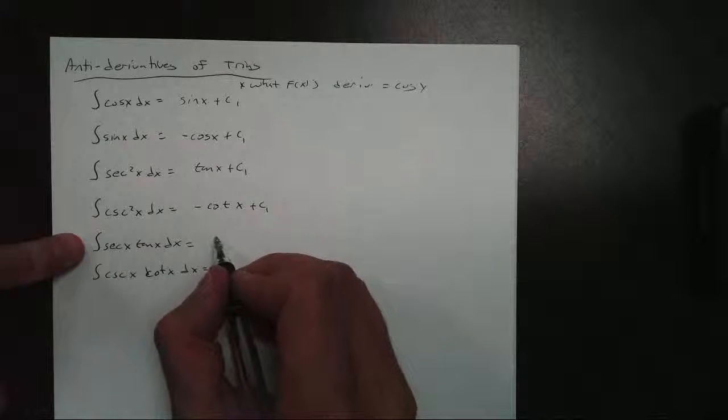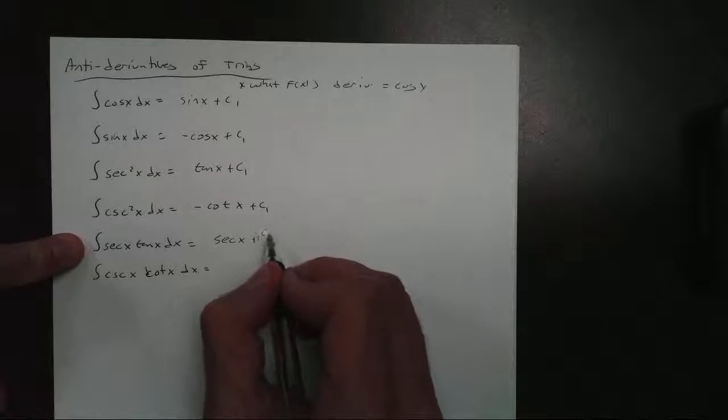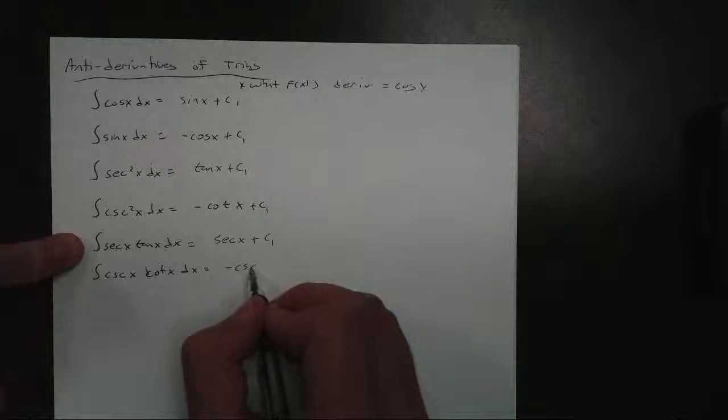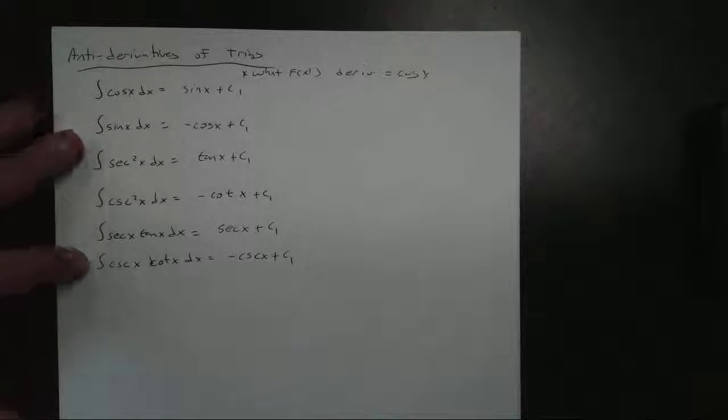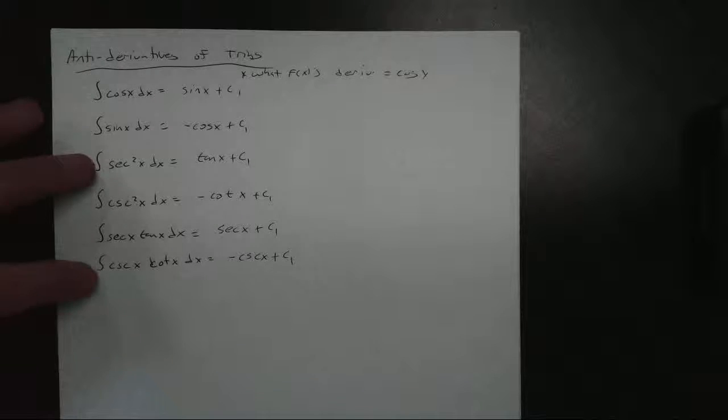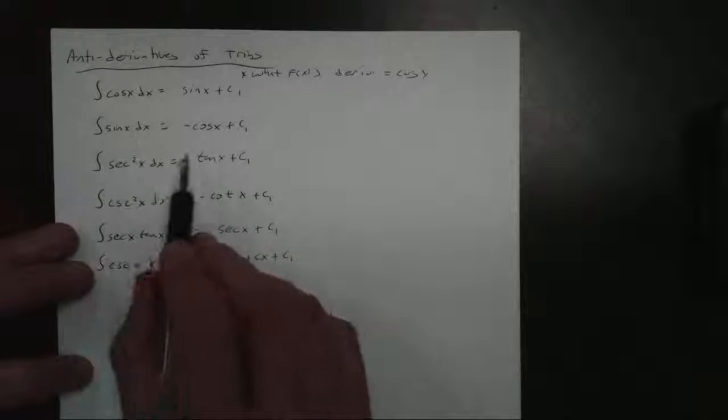Cosecant squared becomes negative cotangent of x plus c1. Secant tangent becomes just secant of x plus c1. And here we get negative cosecant of x plus c1. Now, the one thing I want you to look at here, they're just inverses of each other.